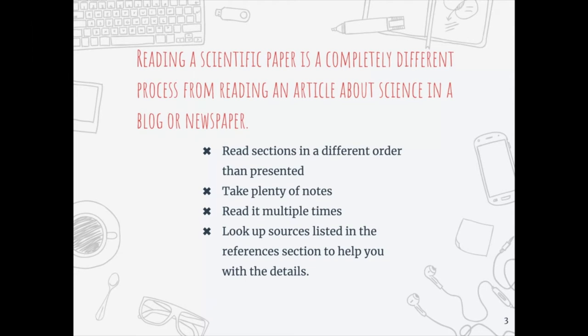The type of scientific paper I'm discussing here is referred to as a primary research article. That's where the scientists are performing the research and experiments firsthand — they're not writing about somebody else who has done the research. A primary research article is a peer-reviewed report of new research on a specific question or sometimes multiple questions.